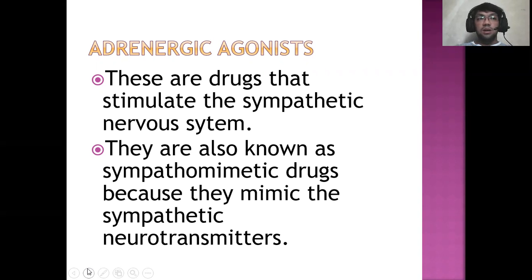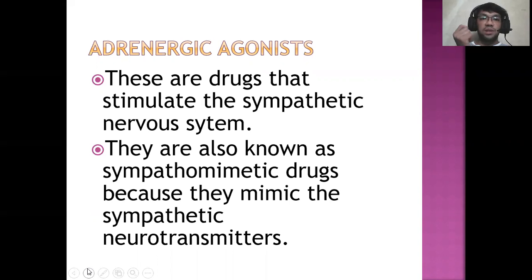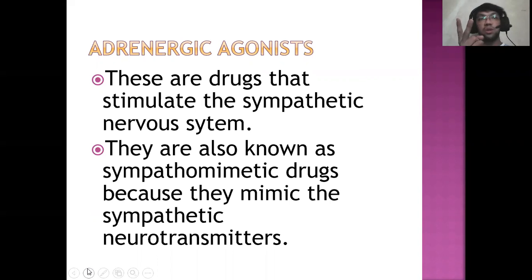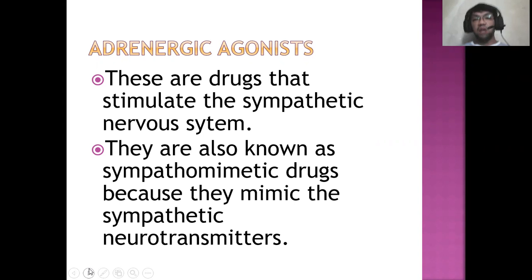If you recall your anatomy subject, there's this topic about the autonomic nervous system — it has two divisions. We have the sympathetic nervous system and the parasympathetic nervous system. The effects of sympathetic nervous system stimulation is that when it is stimulated, all of the bodily systems increase in functioning except for two: the gastrointestinal and the genitourinary systems. But for the opposite, which is the parasympathetic nervous system, there will be a decrease in function of all bodily systems except for two — the GI and the genitourinary, which will increase in function instead.